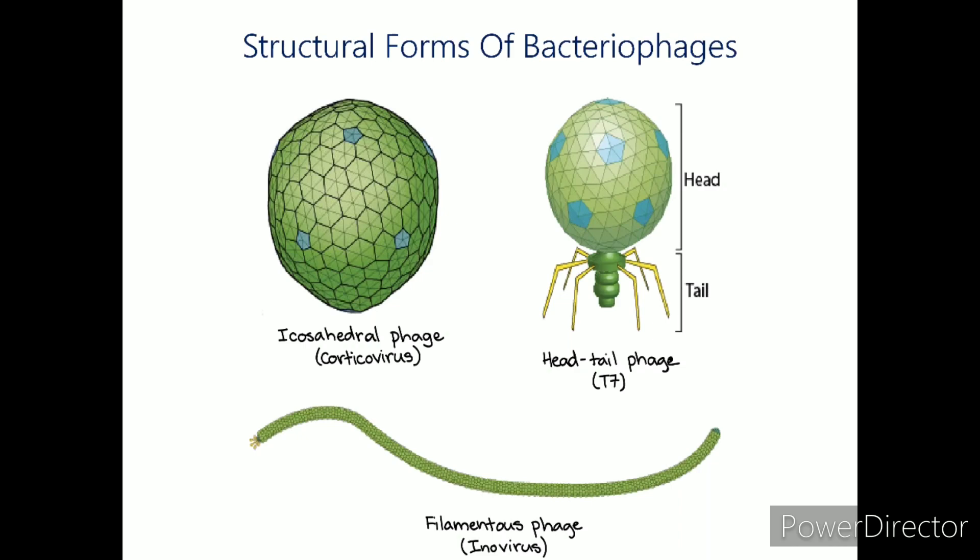Like all other viruses, bacteriophages are highly species-specific towards their host cell. The bacteriophages only infect the single species of bacteria, or even specific strains of bacteria within a species. The basic structure of all bacteriophages is the same; they consist of a core of nuclear material surrounded by a protein capsid.